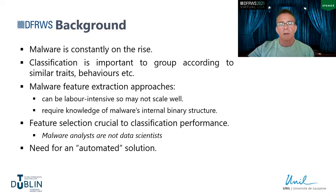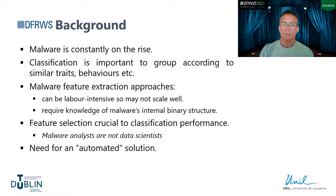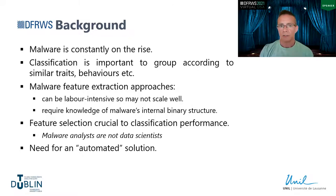To give some background on the issues that motivated this study: malware is constantly on the rise. What is interesting is that new malware strains are generally staying stable, whereas the variants of these original strains are constantly rising at an almost exponential rate. The classification of these variants is important in order to group them into their correct taxonomic class based on similar traits and behaviours.